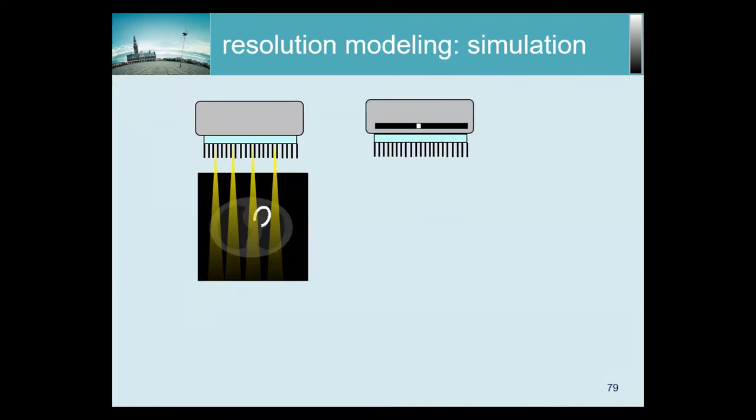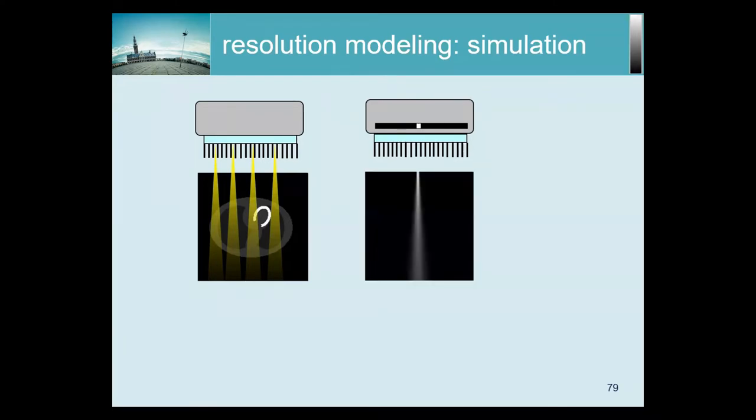So here we have this gamma camera that is looking at this two-dimensional patient, and because of the collimator we have the fact that the camera is not really computing line integrals or acquiring line integrals, but cone integrals. And so we need to model those if you want to account for it during the reconstruction, and then also during the projection and also during back-projection.